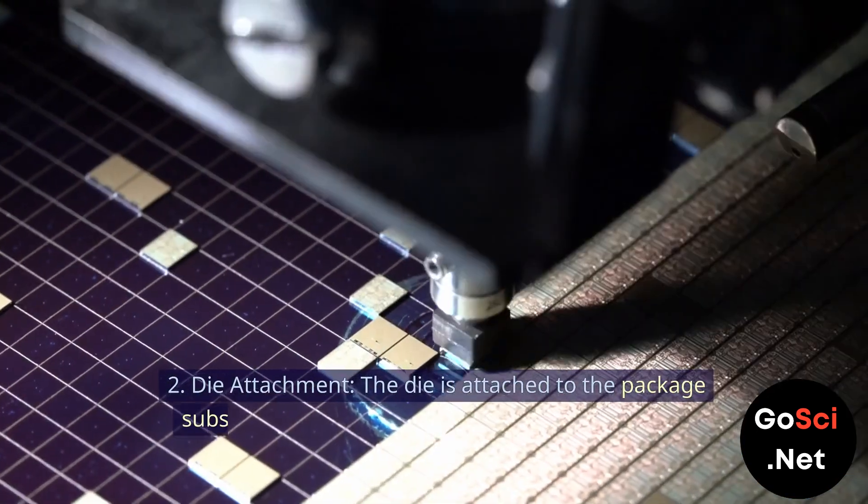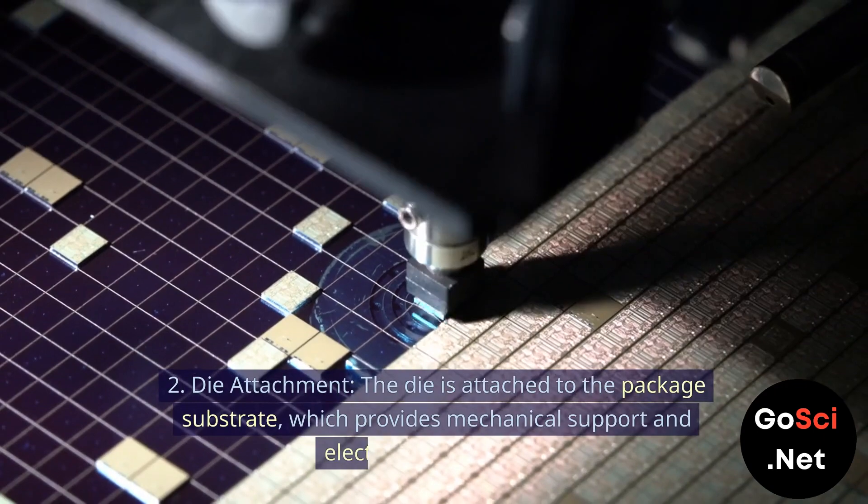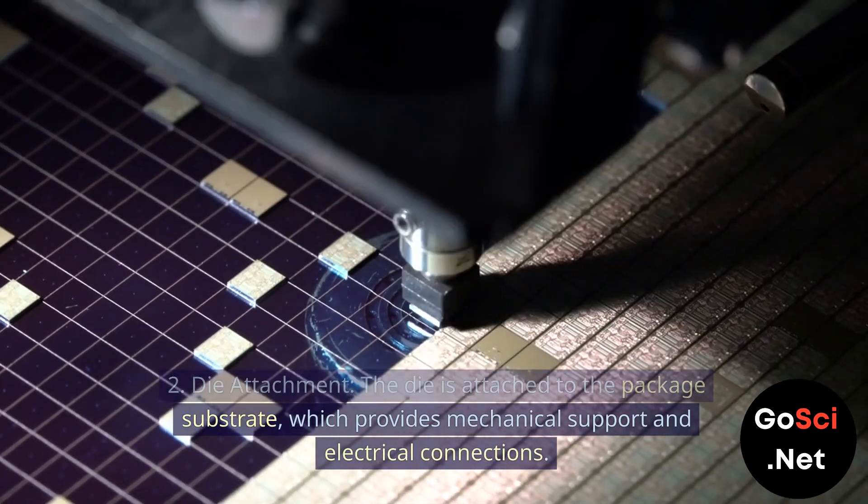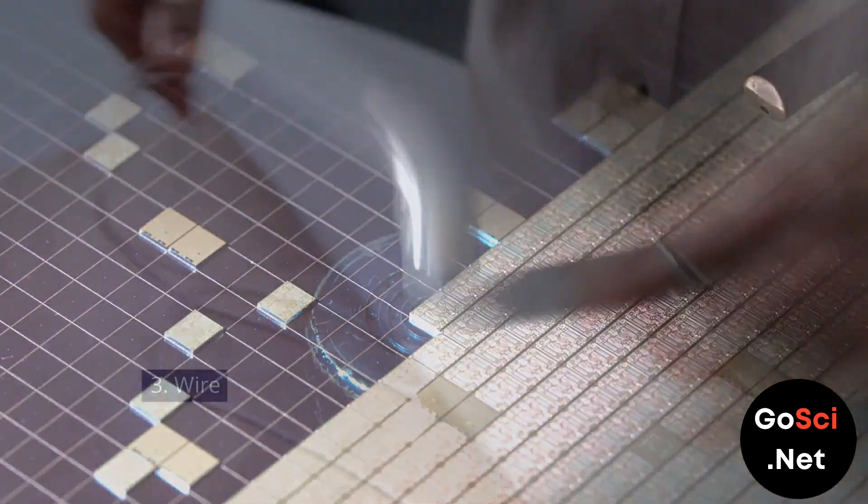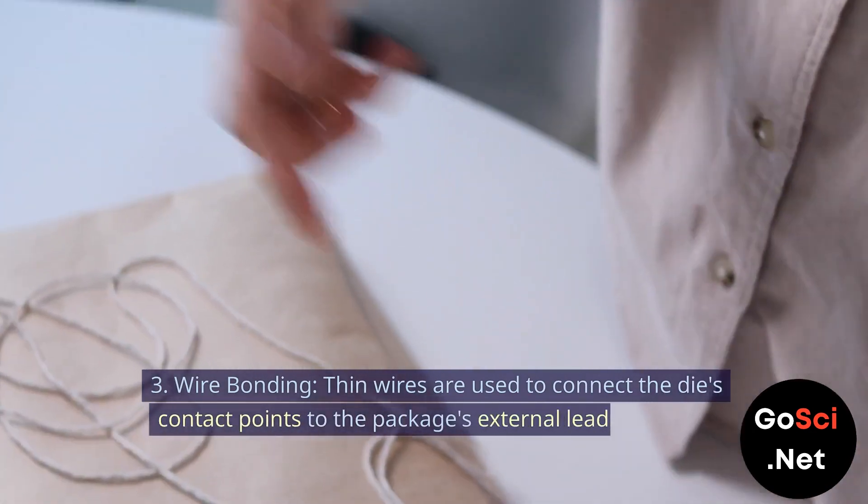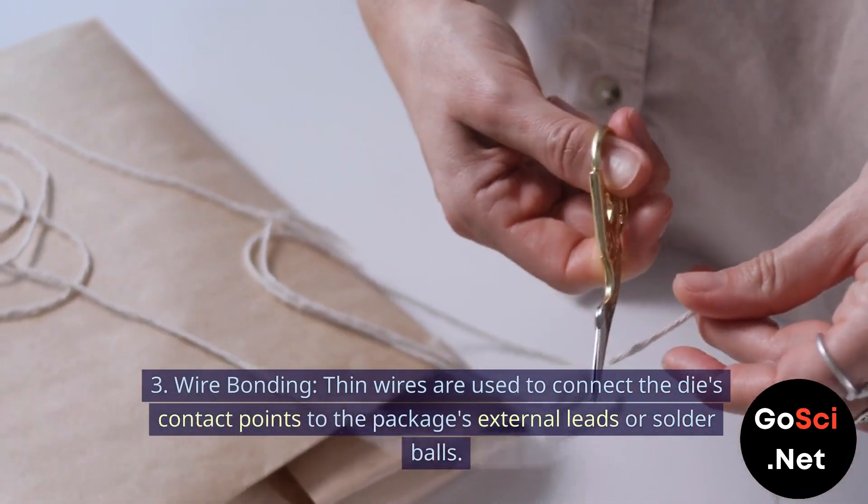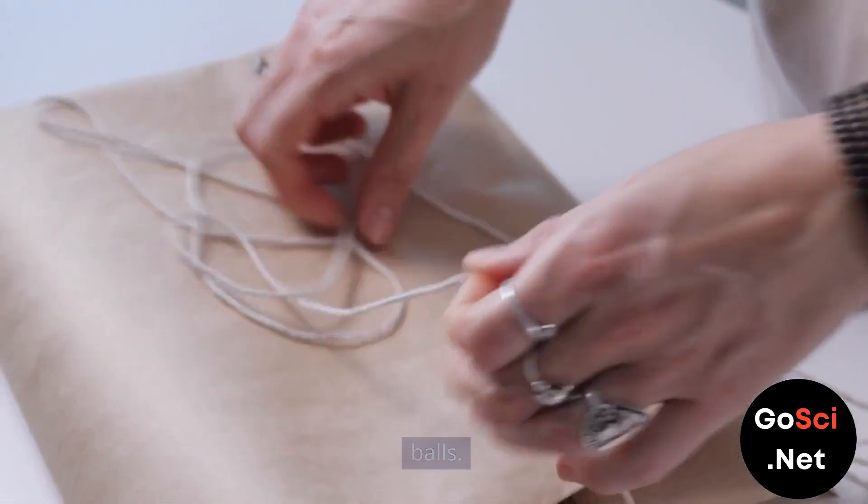2. Die Attachment. The die is attached to the package substrate, which provides mechanical support and electrical connections. 3. Wire Bonding. Thin wires are used to connect the die's contact points to the package's external leads or solder balls.